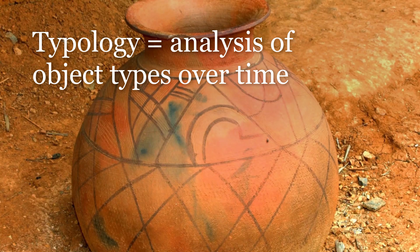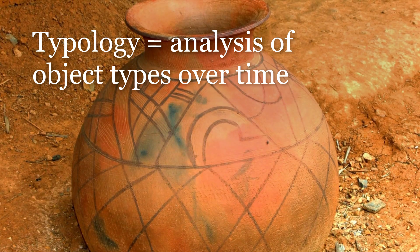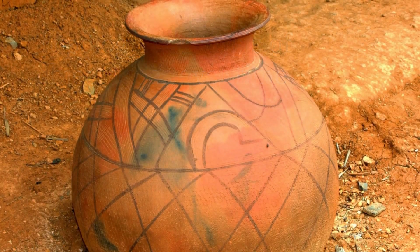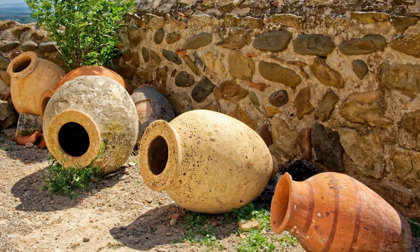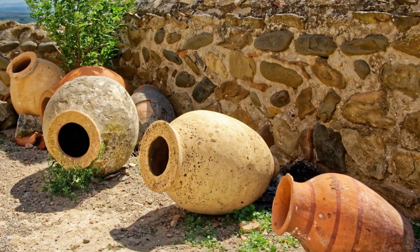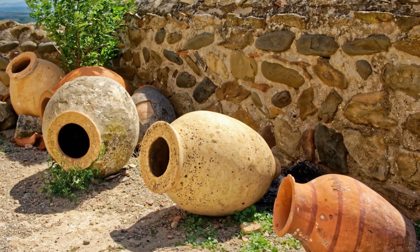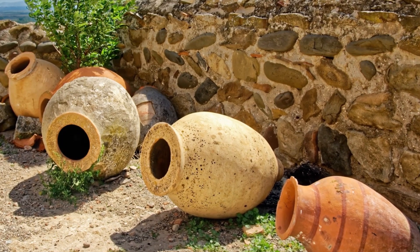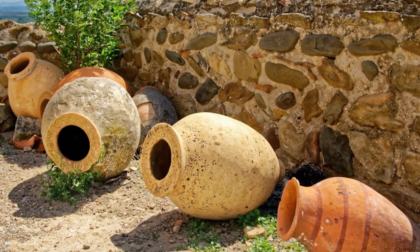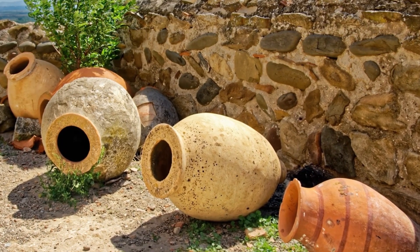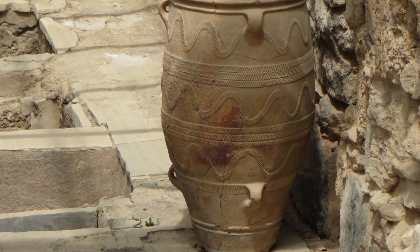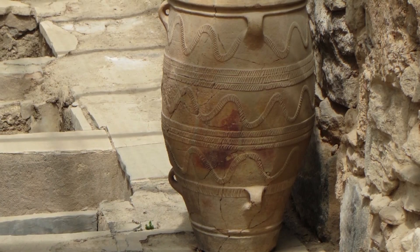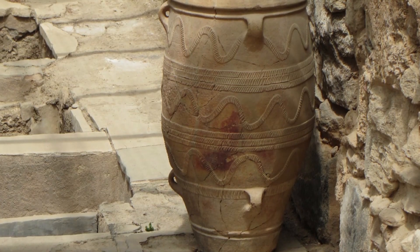Typology is most often used for pottery, also known as ceramics, since pots and vases survive a very long time in the ground and can be a reliable way of dating objects. Ceramic typology is used all over the world, since most human cultures have used specific styles and decorations in their pottery.